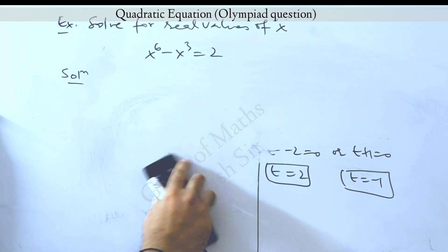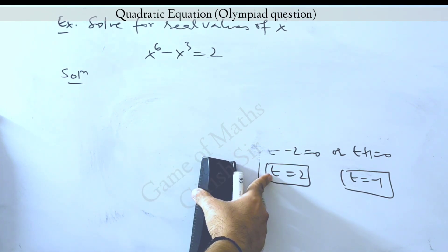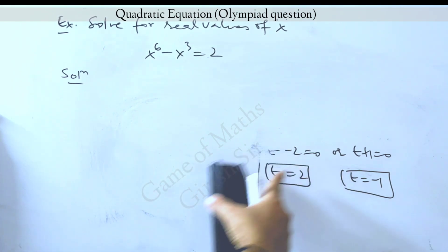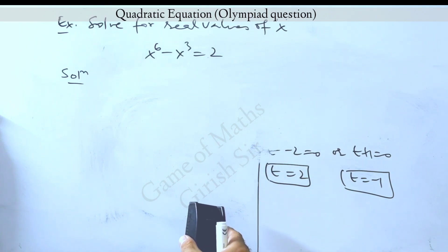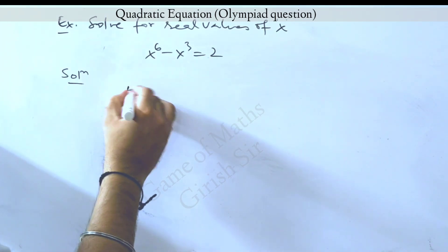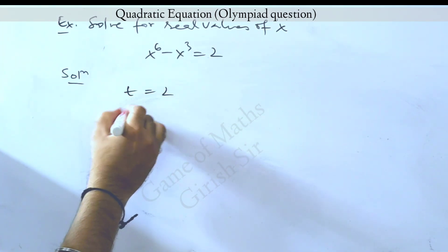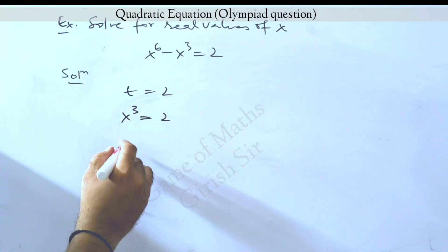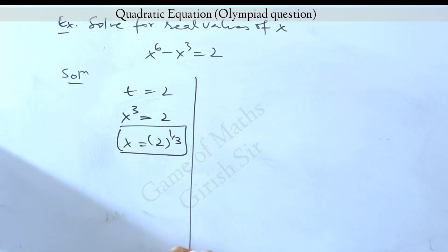I will now put t equal to x cube in both of these and try to find x. One possibility was t equal to 2, which gives me x cube equal to 2. So x equals cube root of 2 is one possible value of x.